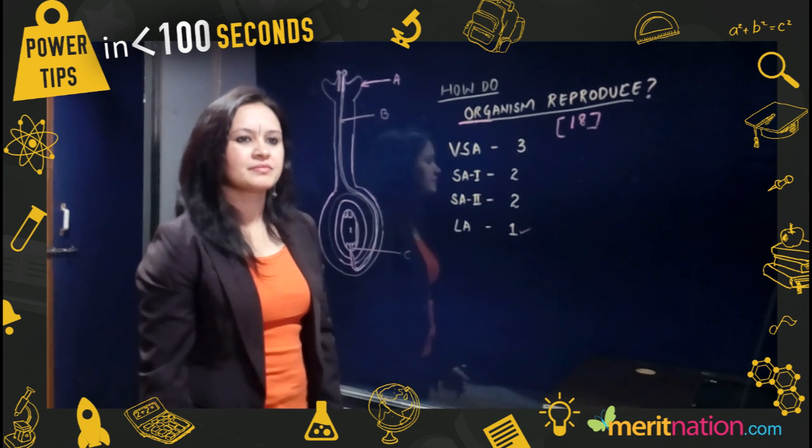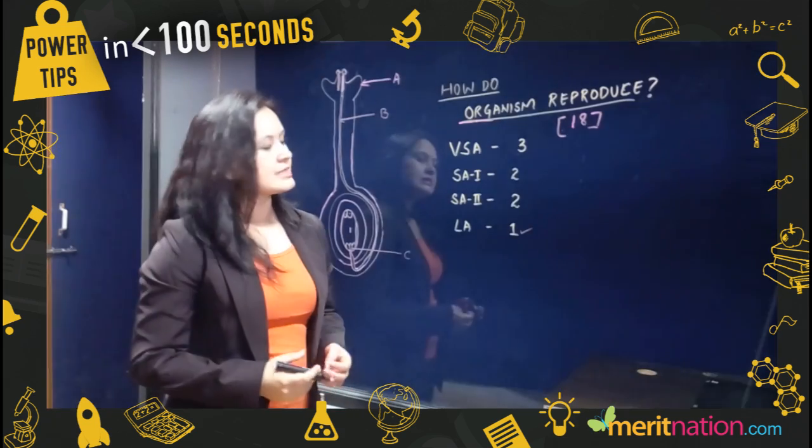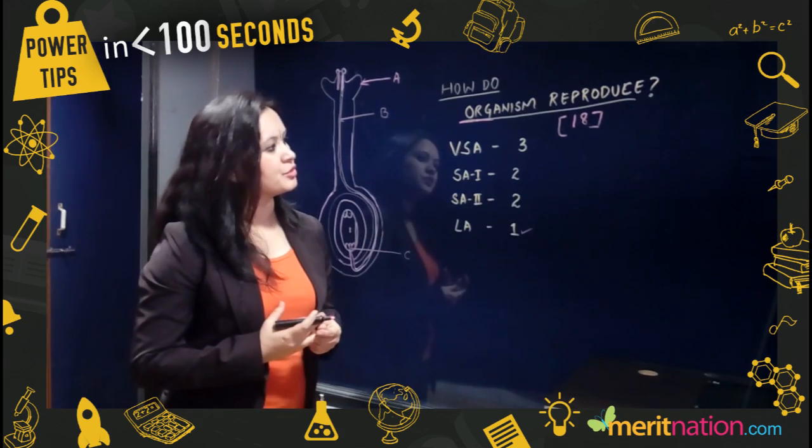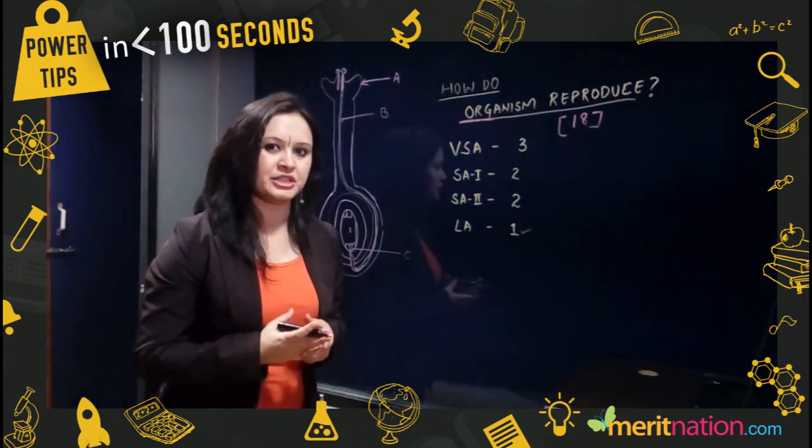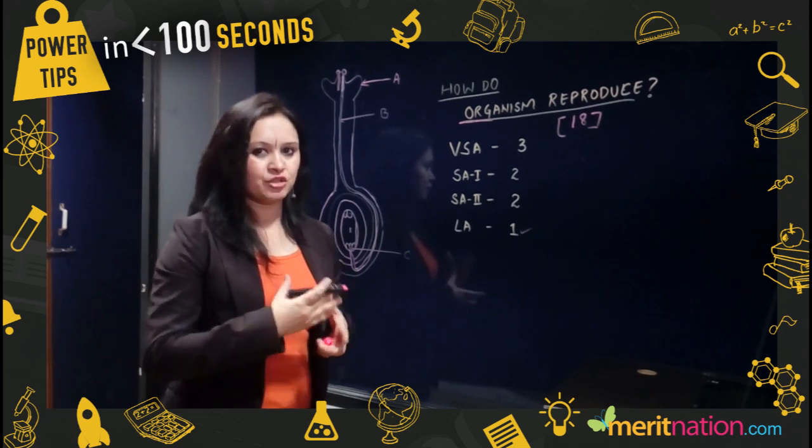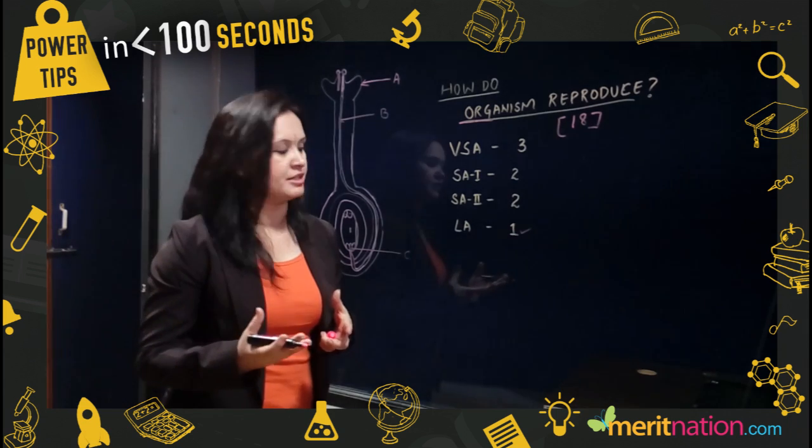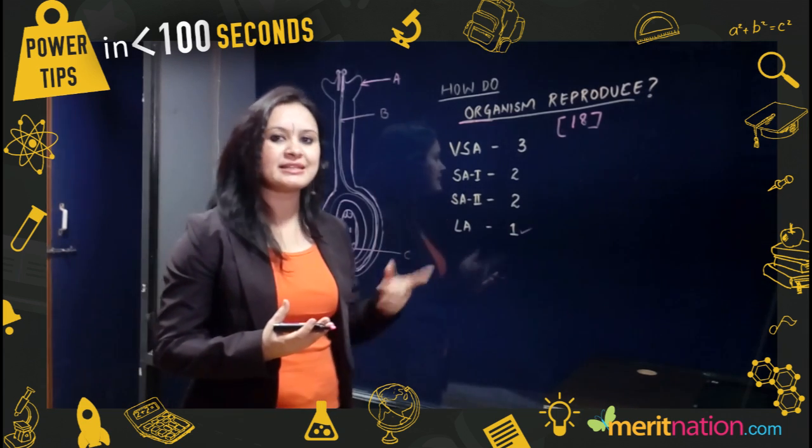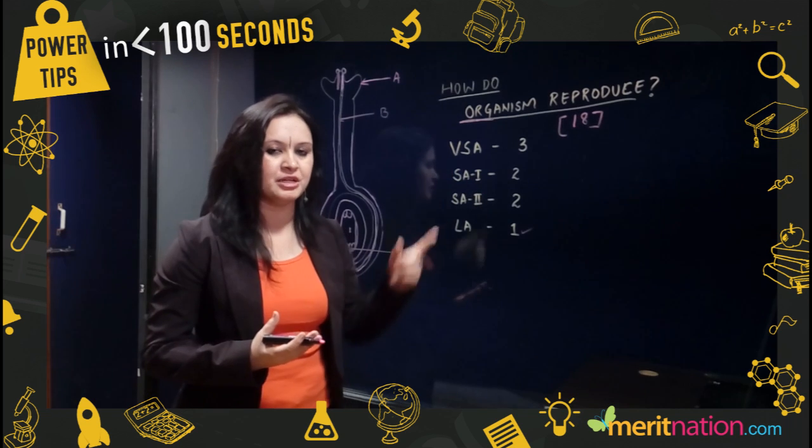What's the preparation strategy for this chapter? See, this chapter 'How Do Organisms Reproduce' carries a total of 18 marks for the exam. And if you see the types of questions that appear in the exam, there are different numbers for different question types.